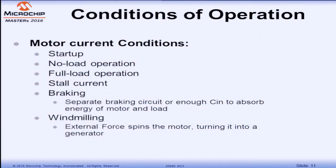With a motor, there are also different operating conditions. At startup, current will be much higher than during normal operation. No-load operation is when the motor has no load on it and it draws lower current at a given speed. Full-load operation is when the load is on the motor and it draws a bit more current, running at a slightly lower speed. Stall current is when you lock the rotor — the only impedance to current is the winding resistance. There's also braking, where you apply essentially a short circuit across the motor terminals to make it stop quickly, and windmilling, where an external force spins the motor and it acts like a generator supplying power back into your bus.